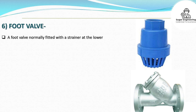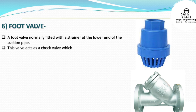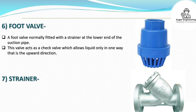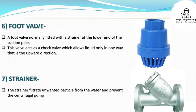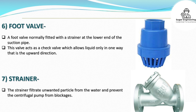Foot valve: A foot valve is normally fitted with a strainer at the lower end of the suction pipe. This valve acts as a check valve, allowing liquid to flow only in one direction — upward. Strainer: The strainer filters out unwanted particles from the water and prevents the centrifugal pump from blockages.